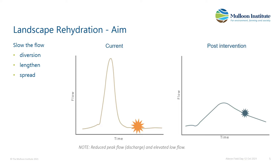So what we're going to try and do is slow the flow. We can do that by diversion — we lengthen the flow path, as Tim was talking about — and we can spread the flow, which reduces the depth and increases the width. What we're aiming to do is reduce those peaks into much lower flows and lengthen that flow hydrograph out, as shown by those two diagrams.